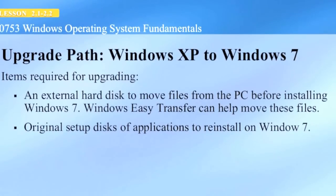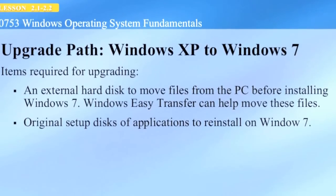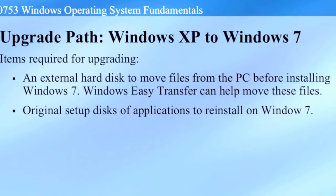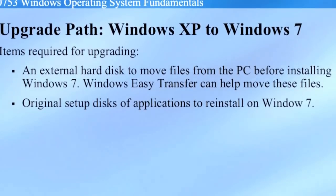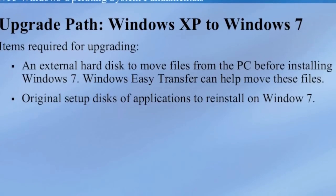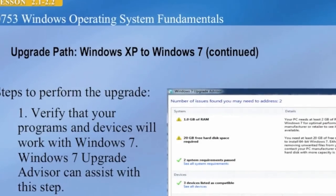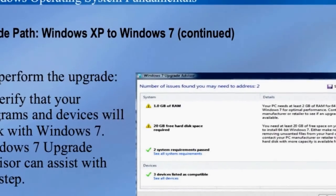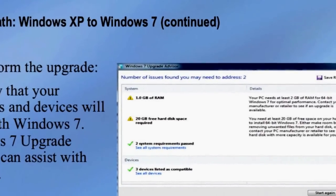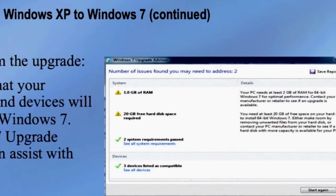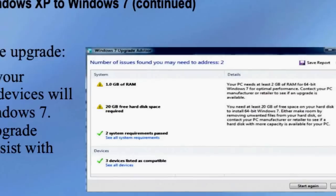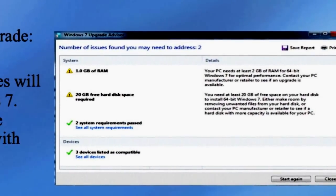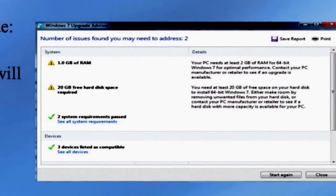When upgrading from Windows XP to Windows 7, you need an external drive or a network drive to transfer your files using the Windows Easy Transfer wizard. You'll also need an original setup disk for your applications to reinstall on top of Windows 7. You should verify that your programs and devices will work with Windows 7 using the Windows 7 Upgrade Advisor. Here we see a screenshot of the Windows 7 Upgrade Advisor, which indicates you need at least 1 GB of RAM and 20 GB of available hard drive space, and it checks other hardware for compatibility.